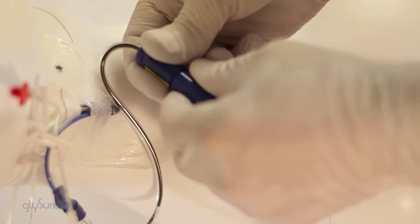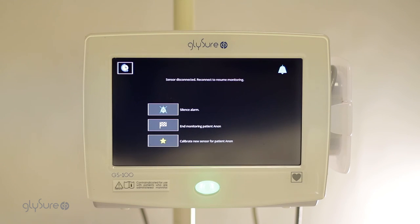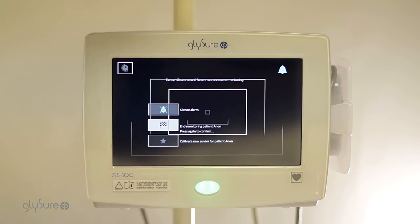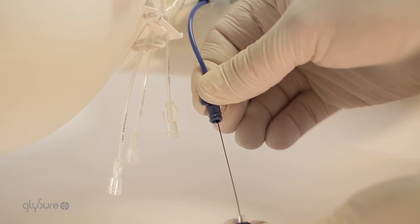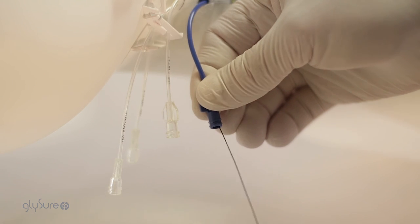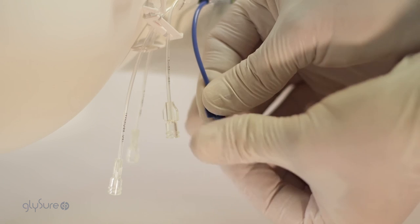Disconnect the sensor from the monitor cable. When the disconnect alert screen is displayed, press the end monitoring button and press it again to confirm. Loosen the lure lock and slowly withdraw the sensor from the CVC and cap the lumen.